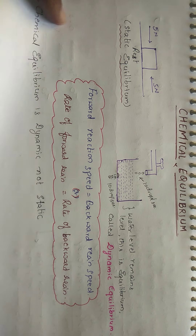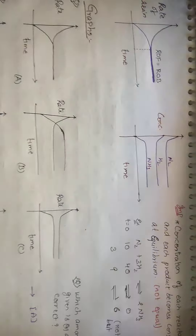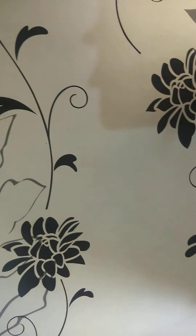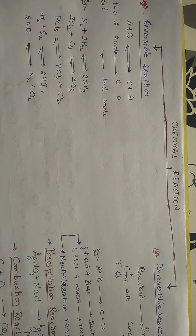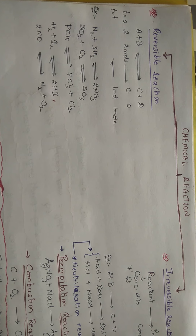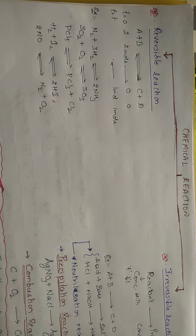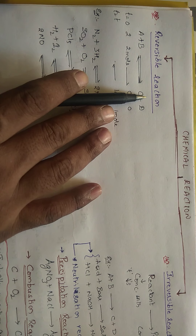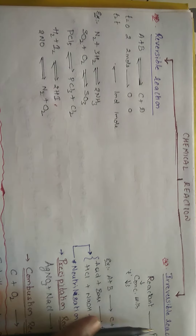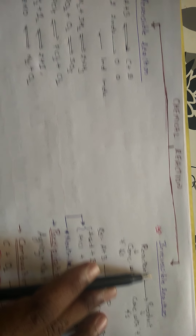Remember: chemical equilibrium is dynamic in nature, not static. Now, if you go for the types of reactions, chemical reactions in this chapter can be basically classified into two types: one is reversible reaction and one is irreversible reaction.